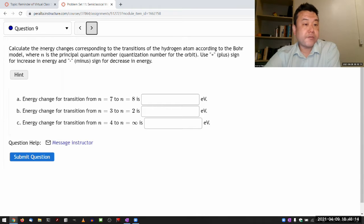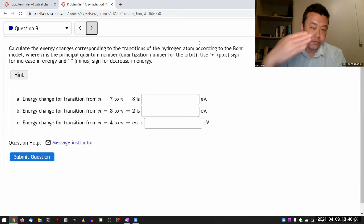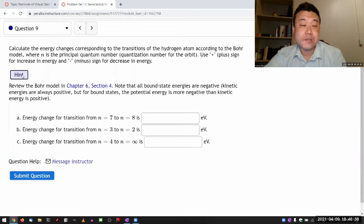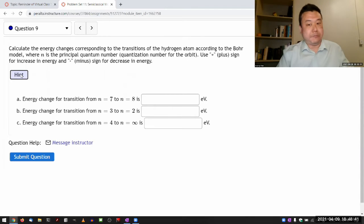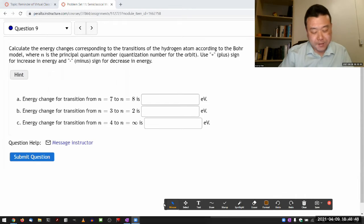Okay, so it says calculate the energy changes corresponding to the transitions of the hydrogen atom according to the Bohr model. If you look at the lecture, we go through the analysis that leads to the Bohr model prediction. For the purpose of this question, it's really simple to answer, especially if you have some basic numbers memorized.